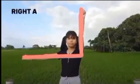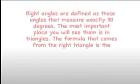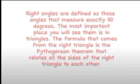Right angles are defined as those angles that measure exactly 90 degrees. The most important place you will see them is in triangles. The formula that comes from the right triangle is the Pythagorean theorem, that relates all the sides of the right triangle to each other.